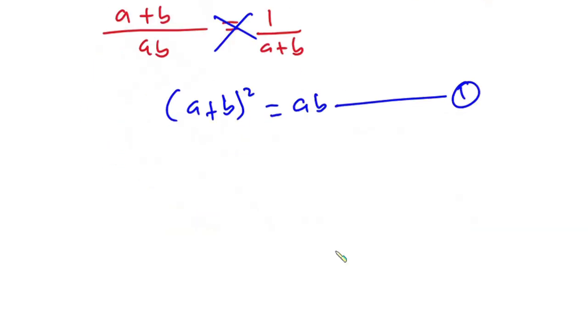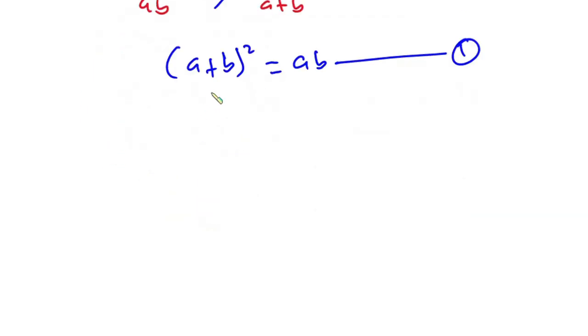Now let's go ahead and expand the left hand side of equation 1. So we have a plus b squared is equal to a squared plus b squared plus 2ab.